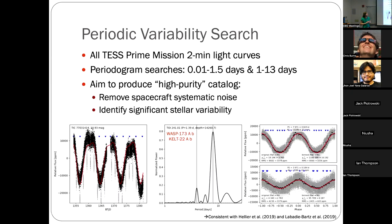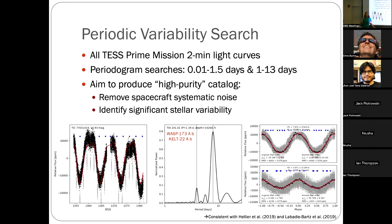I'm focusing on periodic variability — a changing signal that repeats with time. Because of those 27-day time scales, I'm limiting the periodic search to 13 days or less, and down to 0.01 days because of the two-minute cadence. We're aiming to produce a catalog of high purity, doing a lot to remove systematic signals. For example, from the ground you get an alias at one day because you can only observe at night. There are different aliases with TESS since it is space-based.